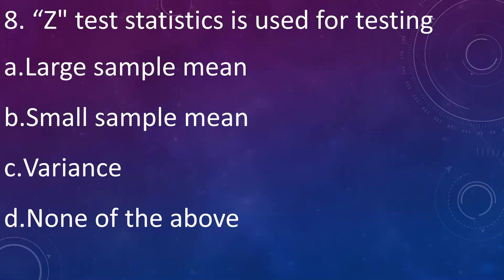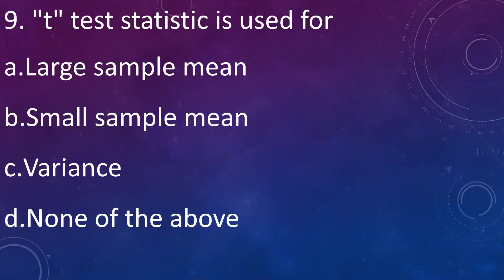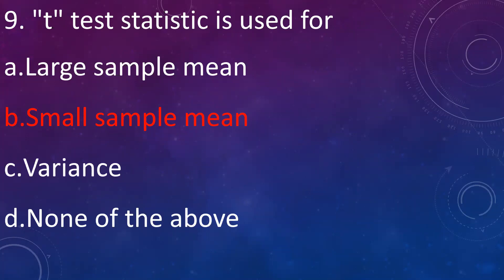The Z test statistic is used for testing: A: large sample mean, B: small sample mean, C: variance, D: none of the above. Answer is A: large sample. When the sample is large — that is more than 30 — the Z statistic is used to compare the sample mean. The T test statistic is used for: B: small sample mean. When sample size is less than 30, we use T test statistics to compare the mean of the sample.